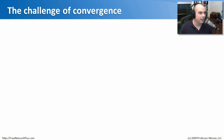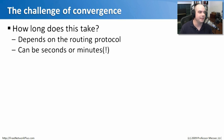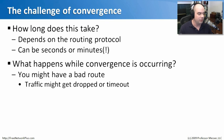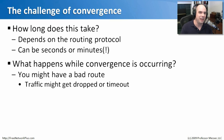Depending on the routing protocol, that update might take seconds or minutes. During convergence, packets going into your router may not know where they're going — your router may have a bad route, still trying to send to a network that no longer exists, or traffic might time out and packets get dropped entirely. When you decide to use RIP, you accept that convergence times will be long. Or if you need fast convergence, you use OSPF — it's more difficult to configure, but it gives you a much faster convergence time, which is important for your network.